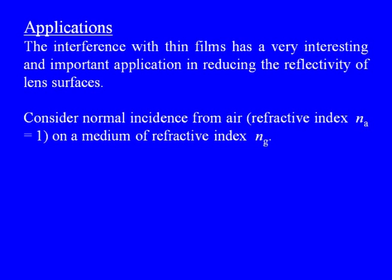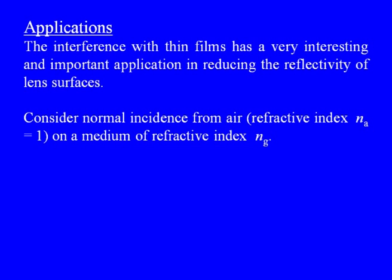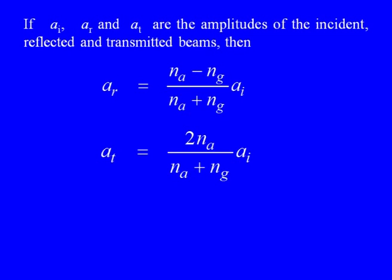Let us now come to the applications. The interference with thin films has a very interesting and important application in reducing the reflectivity of lens surfaces. All optical instruments consist of several lens components and several surfaces, and the reflectivity at each surface must be reduced to a minimum to avoid overall loss of light. Consider normal incidence from air, refractive index n_a equals 1, on a medium of refractive index n_g. If A_i, A_r, and A_t are the amplitudes of the incident, reflected, and transmitted beams, they are related as follows.